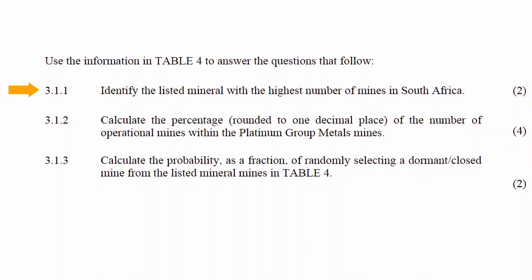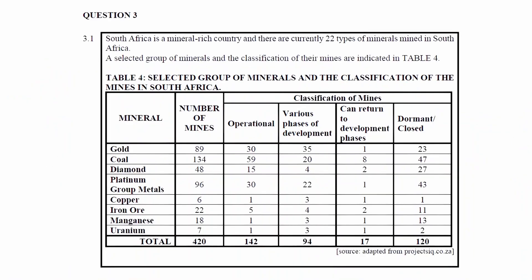The last row of the table lists the totals for each column. We have to use the information in Table 4 to answer the questions that follow. In question 3.1.1, you have to identify the listed mineral with the highest number of mines in South Africa. The answer is coal.